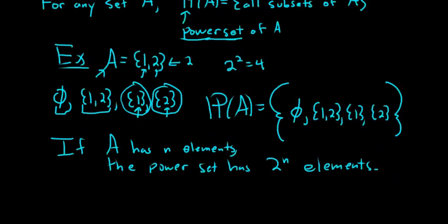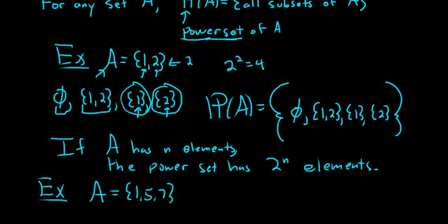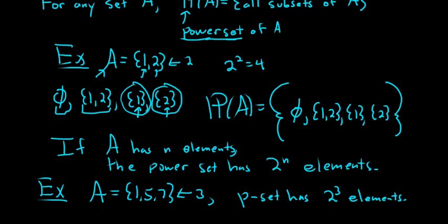For example, if A = {1, 5, 7}, then A has 3 elements, so the power set has 2³ = 8 elements. I have a proof of this in another video — if you have a set with N elements, it has 2^N subsets, meaning the power set has 2^N elements. That's it, thanks for watching.